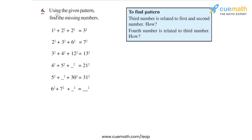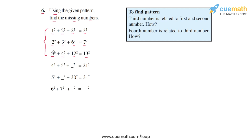In question six, the problem statement says: using the given pattern, find the missing numbers. Looking at the six statements given, the first three are completely specified. We have: 1² + 2² + 2² = 3², then 2² + 3² + 6² = 7², and then 3² + 4² + 12² = 13². There is some pattern in these three statements that we have to find out.